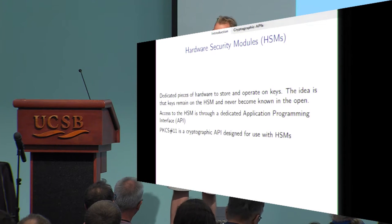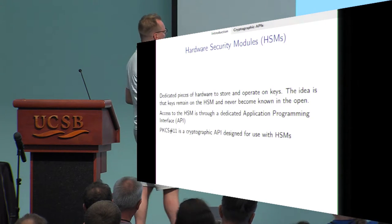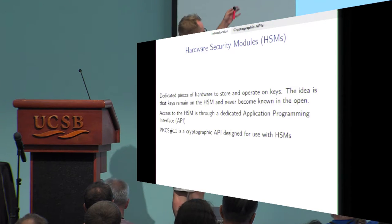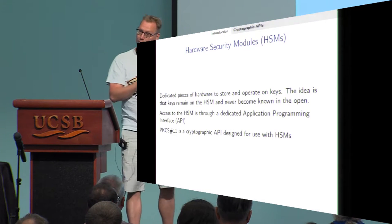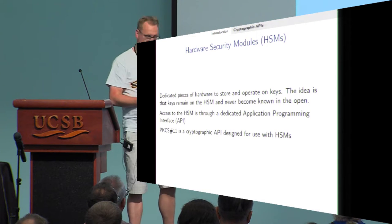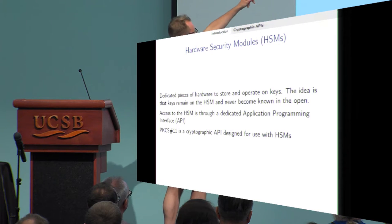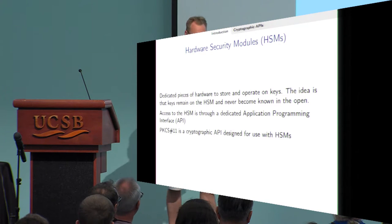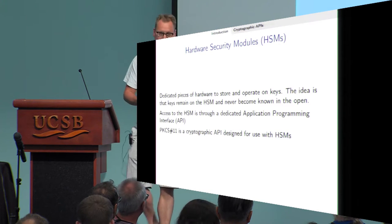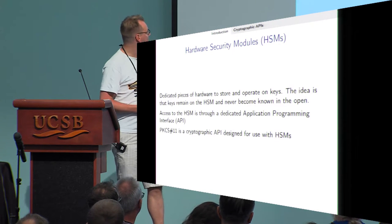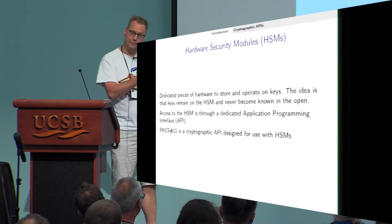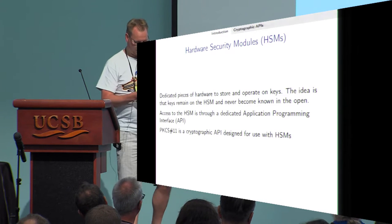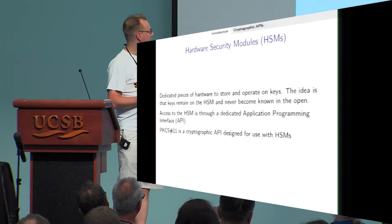There is a key inside the HSM and you can operate with it, but you will never get to see the key. To access it, you send a command to it so it knows what to do. This is what the application programming interface is — the API. PKCS#11 is a cryptographic API designed to be used with HSMs.